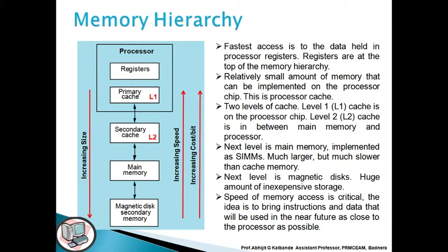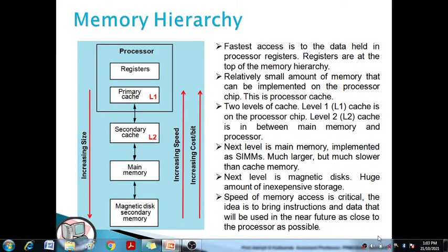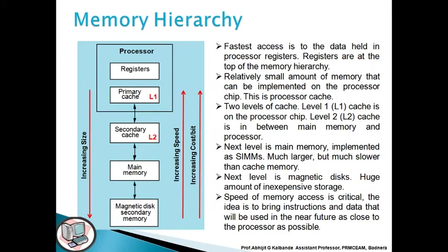Going from top to bottom, the first block is the processor — meaning the internal parts of the CPU. The internal part of the CPU contains a processor, and in the processor there are two memory elements. The first memory element is the register. The register is formed using a combination of different flip-flops, such as an 8-bit register.